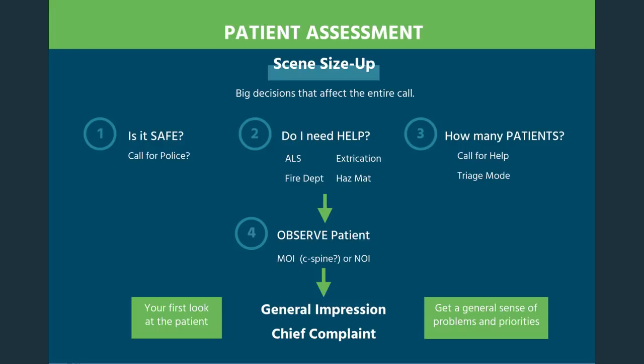Two and three have to do with needing help. Number two: do you need ALS, do you need extrication, is there a fire or hazmat? And number three: how many patients? If there are multiple patients, you're going to have to call for help and then switch to triage mode. Triage mode is a different animal than when you find just one patient at a scene.